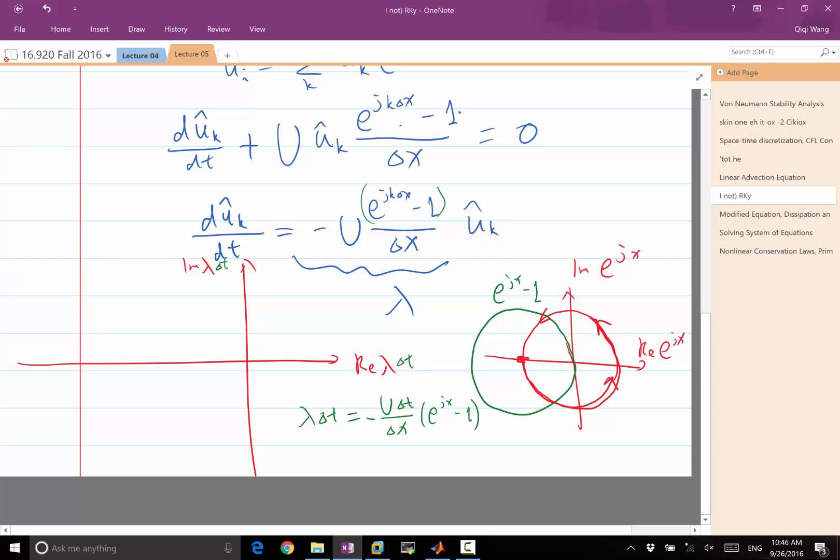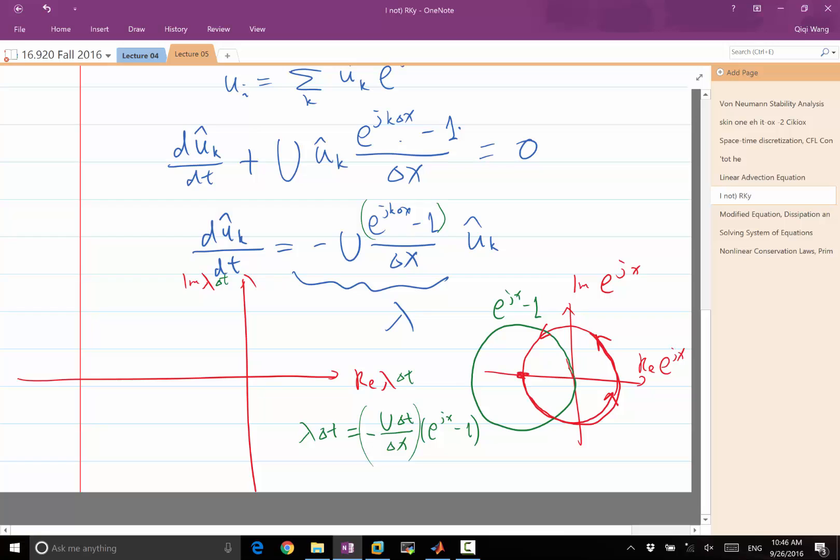So our analysis, we want to look at where this lambda delta t is, which is minus u times delta t over delta x times this green circle over here. So we are expanding this green circle by a coefficient that is u times delta t divided by delta x. So is that going to make us stable for forward Euler? So this part is on this green circle. And we are multiplying green circle. Remember, this is the origin. We are multiplying the green circle by this number.